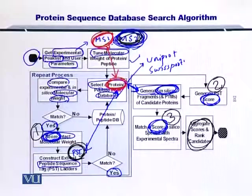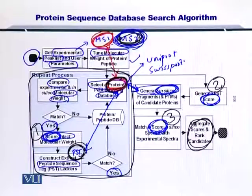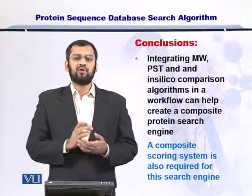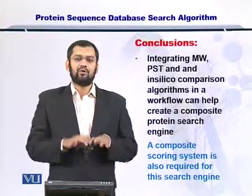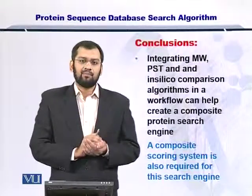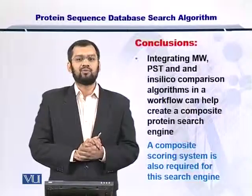In this way, you can integrate the molecular weight, the PSTs, and in silico fragmentation into one big system that can help you to identify proteins. Once you have processed this protein, you have to select the next protein from the database and repeat this entire process again. In this way, you will have scores for all the proteins in the database. In conclusion, by integrating the molecular weight, PSTs, and in silico spectral comparisons, you can have a very robust score for an overall identification. You will need a composite scoring scheme — by composite, I mean scores for individual components that give you an overall score towards protein identification.